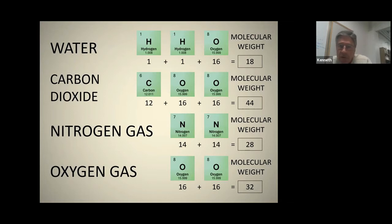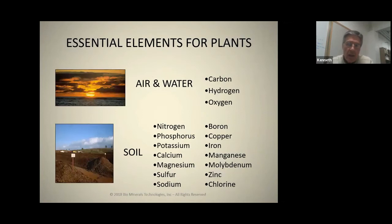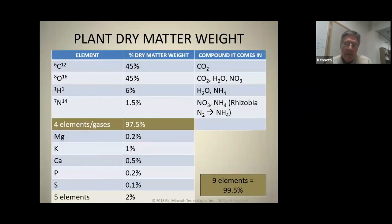Hydrogen and oxygen has a molecular weight of 18. Carbon dioxide: we have 12, 16, and 16 — it's 44. Nitrogen gas: 14 and 14 is 28. Oxygen is 32. This is how God puts things together. So when we start looking at what makes up a plant, we can take the plant's dry matter weight and look at what elements are comprising this material.